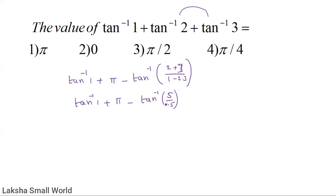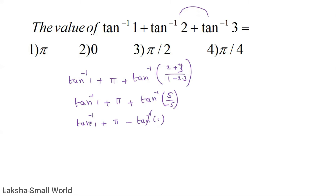This simplifies to tan⁻¹(1) + π minus tan⁻¹(−1). So minus tan⁻¹(1) plus tan⁻¹(1) plus π, which simplifies further.